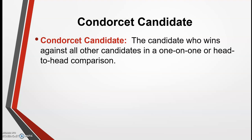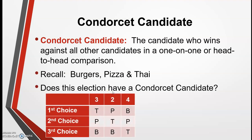If you'll remember, we talked about Condorcet candidates earlier in our first video. A Condorcet candidate is simply any candidate who wins against all other candidates in a one-on-one or head-to-head comparison. We looked at an example — the burgers, pizza, and tie example — where pizza beat each of the other candidates in a head-to-head comparison, and therefore pizza was the Condorcet candidate in that election.